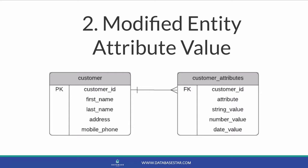The second option is something I call a modified entity attribute value. It follows a similar design as the EAV — there is an entity column and an attribute column, used in the same way. The entity relates to the record in the other table, such as customer, and the attribute is the custom attribute that the user has defined. The difference is that instead of one value column, there are three: number value, string value, and date value. Each row will have a value in only one of these columns. The reason for these three columns is that you can enforce data quality more easily by having specific data types — you can ensure dates are valid, numbers can be sorted, and so on.